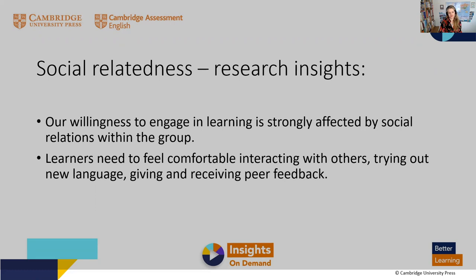The second very important aspect of social relatedness is the peer-to-peer relationship amongst the students themselves. Learners also need to feel comfortable interacting with others in the group so that they feel happy about trying out new language and giving and receiving feedback. Studies have shown that students who have positive relationships with their peers have higher levels of engagement, motivation and achievement. A positive, supportive group culture underpins all learner motivation and engagement, and also contributes to the well-being of everyone involved.